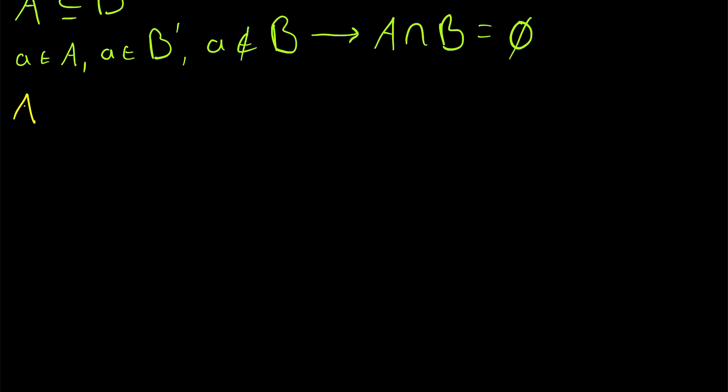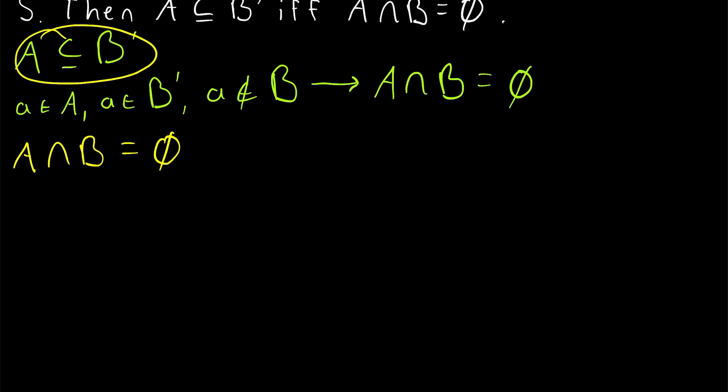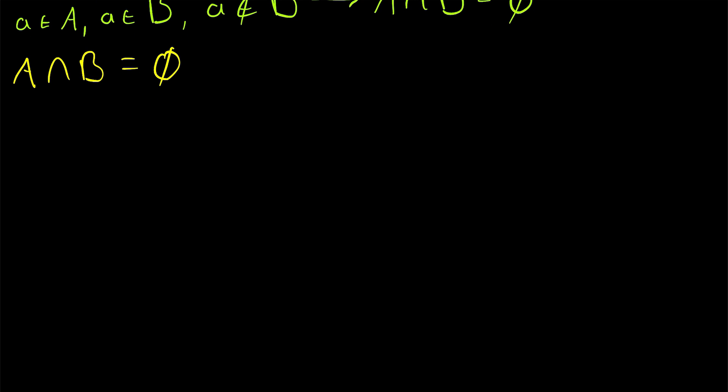Now, we will assume that A intersect B is equal to the empty set, and we want to prove that A is a subset of B'. And this is super easy. Since we want to show that A is a subset of B', we want to start off, again, by taking an arbitrary element, little a, of the set A, and we want to show this element must be in B', the complement of B.